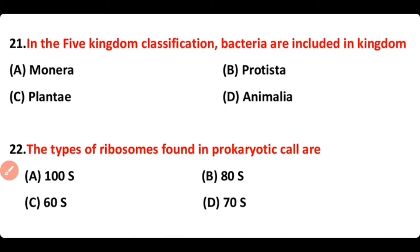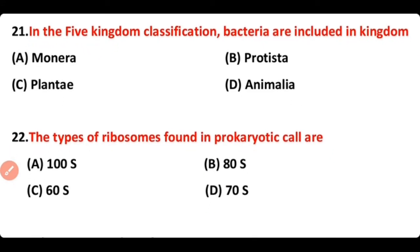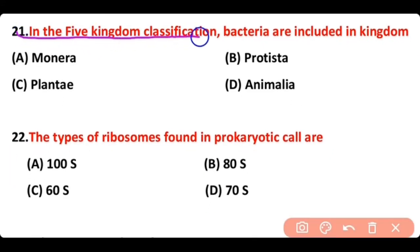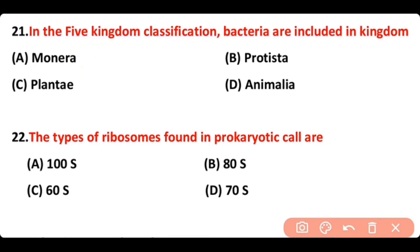Question number 21. In five kingdom classification, bacteria are included in kingdom Monera. The correct answer is option A.